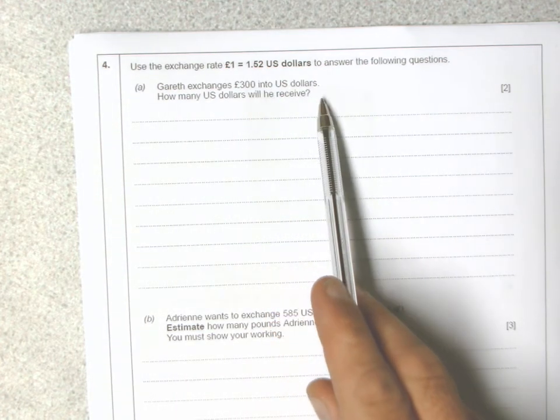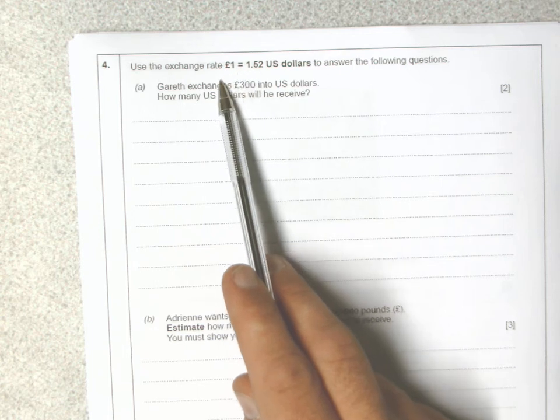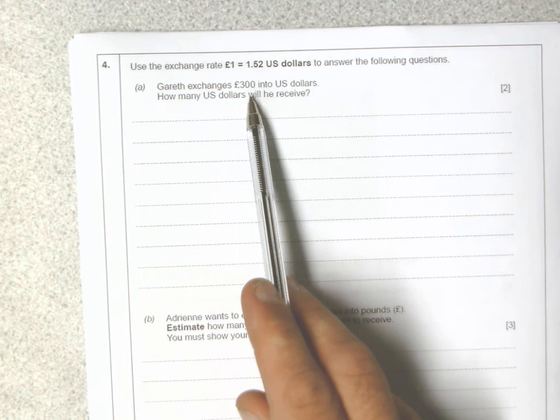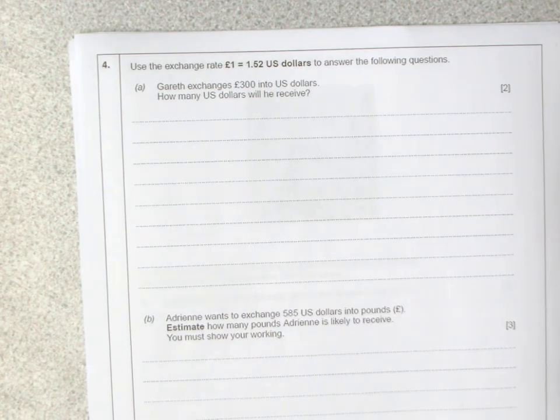If you're changing from pounds into a foreign currency, we're going to multiply by this exchange rate. So given 1 pound is $1.52, if you have 300 pounds, we need to multiply $1.52 by 300.